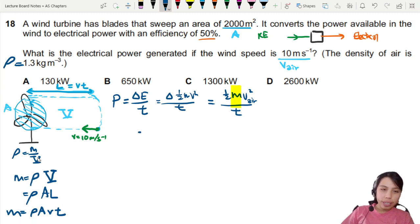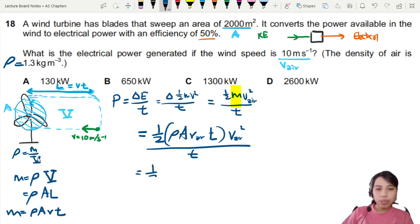Let's plug everything into our main equation now. So we have half mass will be rho A velocity of air times t as the mass and of course times the velocity of air squared divided by t. So this will give us half, t and t cancel out. So this will be half rho A V cubed and the V here is the V of the air not the turbine rotating.